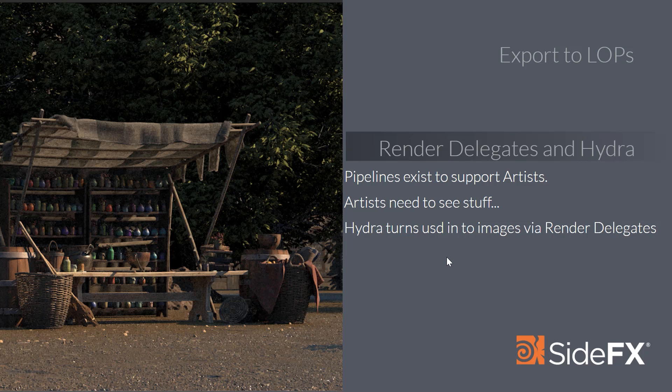Pipelines exist to support artists, but artists also need to support the pipeline and artists need to see things. They need to see their work progress and be evaluated consistently. When you get approvals, whether you're a sole user or in a very large studio, you know how you got there and how to fix it when it breaks. USD is a great platform for that. Hydra turns USD into images via render delegates.